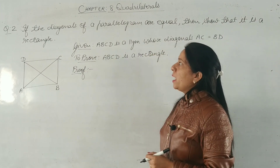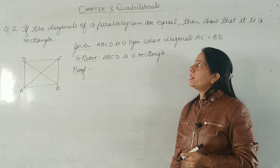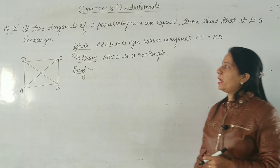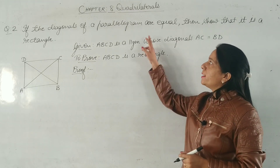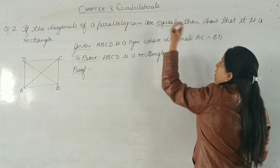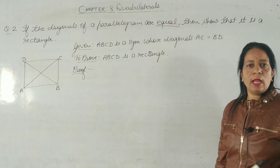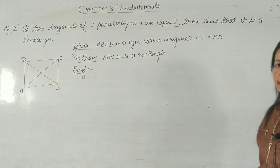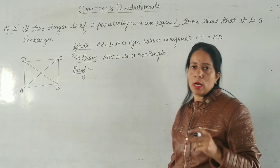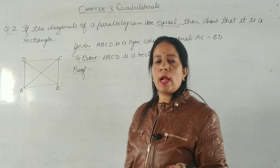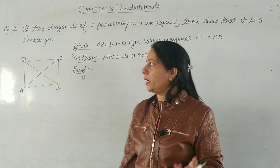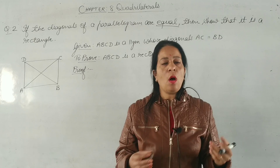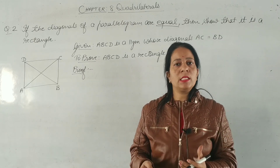Question 2: If the diagonals of a parallelogram are equal, then show that it is a rectangle. You are given a parallelogram whose diagonals are equal. You have to prove that this parallelogram is a rectangle.